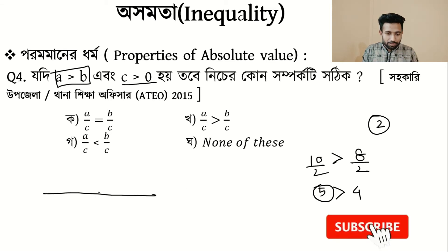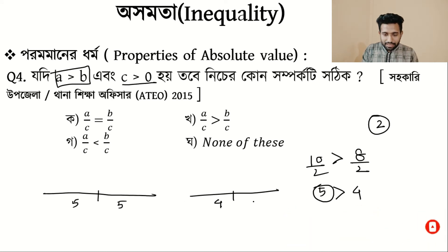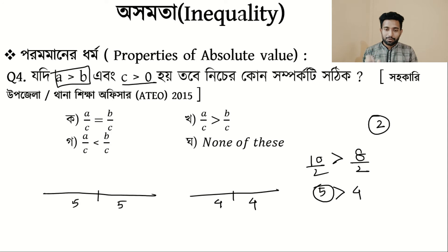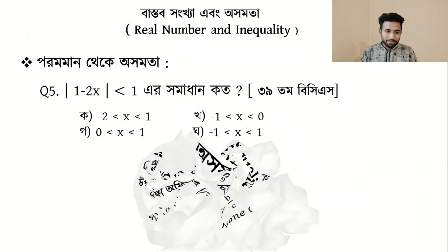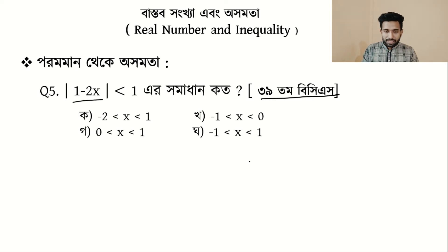So the answer is the correct option. Next question: modulus of 1 minus 2i is less than 1. This is similar to what we have done.